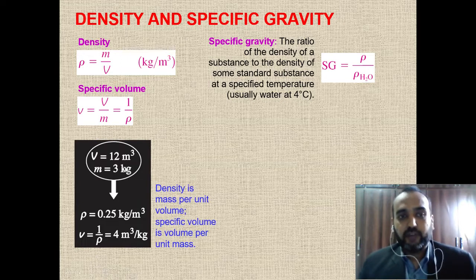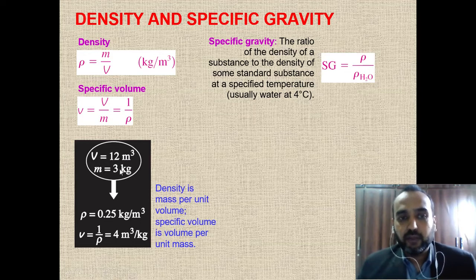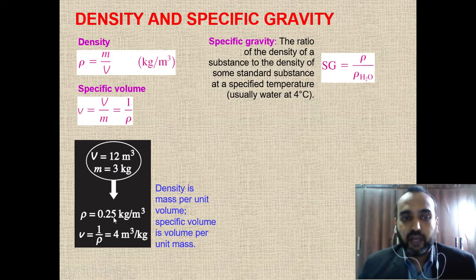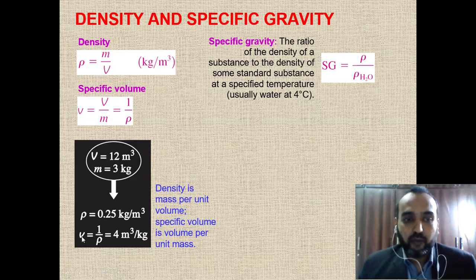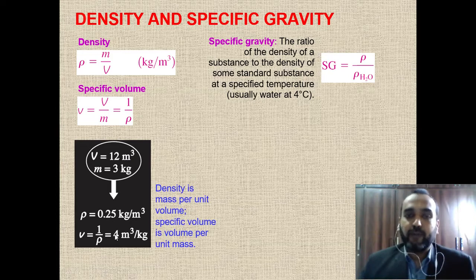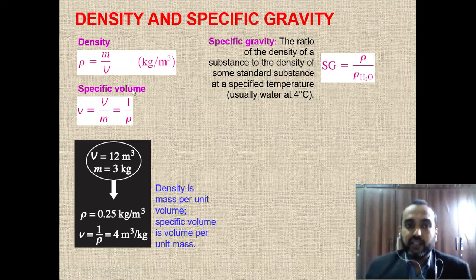For example, if we have a volume of 12 m³ and a mass of 3 kg, then density = mass/volume = 3/12 = 0.25 kg/m³. The specific volume is the reciprocal: 1/0.25 = 4 m³/kg, or equivalently 12/3 = 4 m³/kg. So specific volume is simply the property (volume) divided by mass.